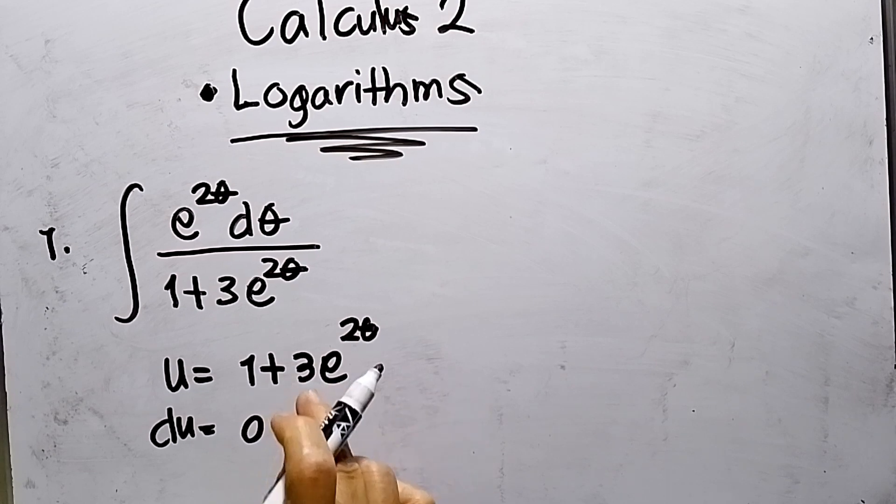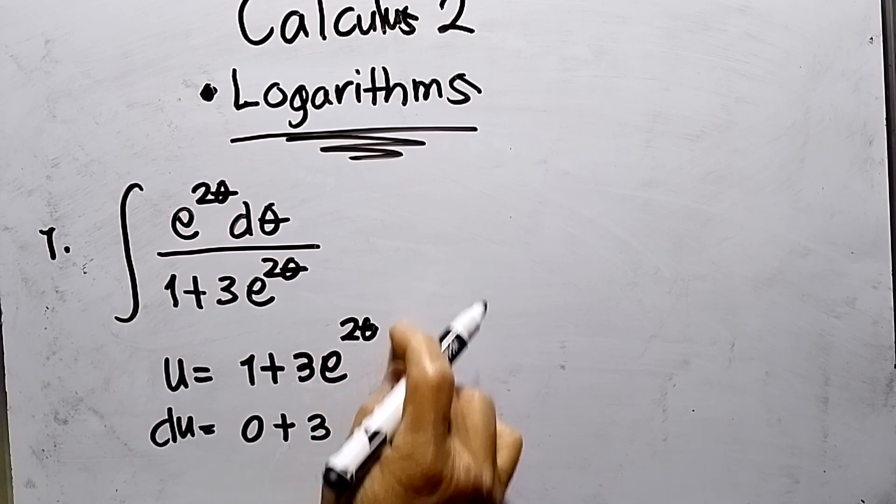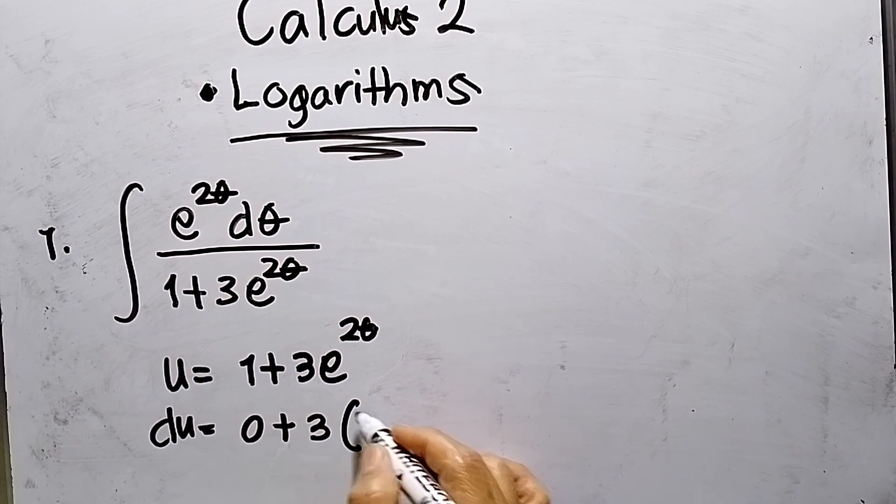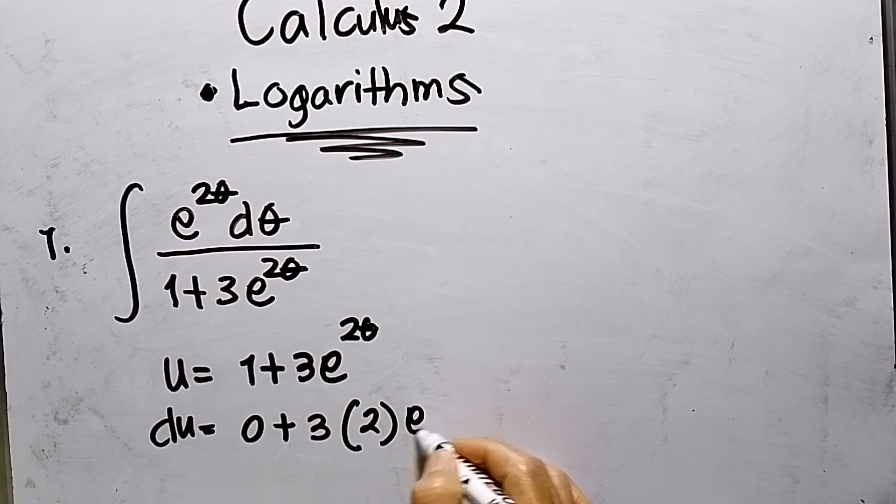This is a product, so this will be 3, then differentiate the second, so this will be 2 times e to the 2θ.